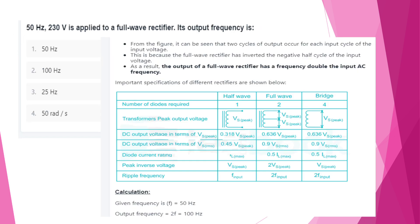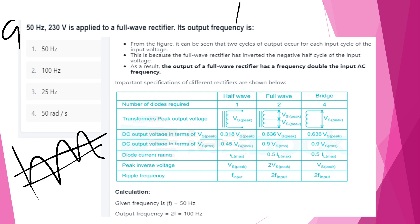Next question: 50 Hz, 230V is applied to a full-wave rectifier. Its output frequency is? The output of a full-wave rectifier has a frequency double the input AC frequency, so output frequency = 2F = 2 × 50 = 100 Hz. Option B: 100 Hz.